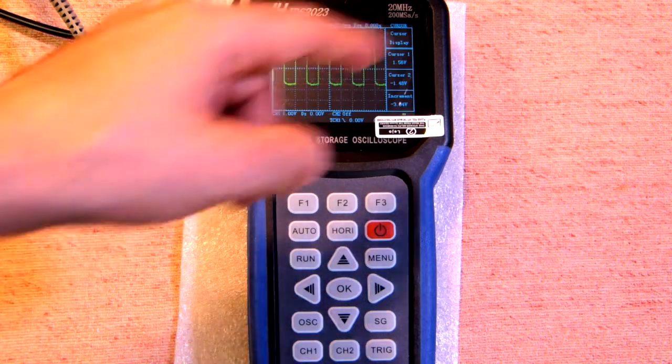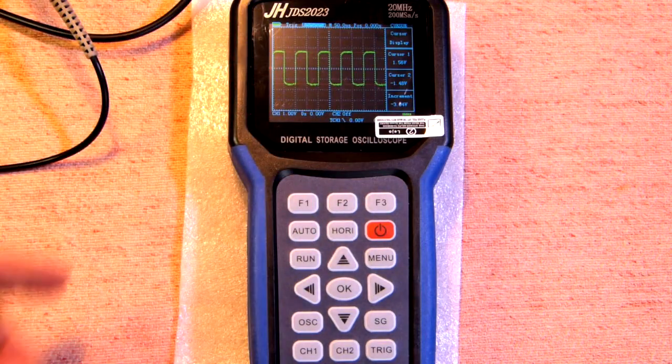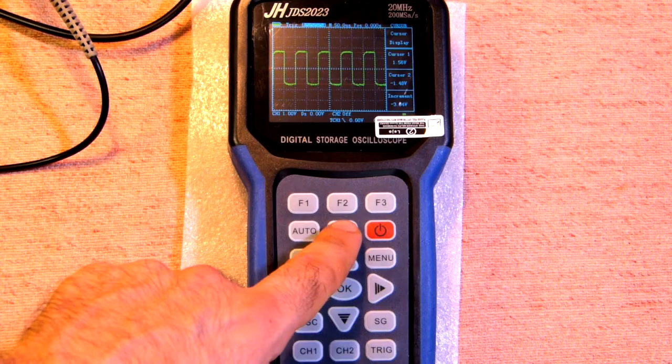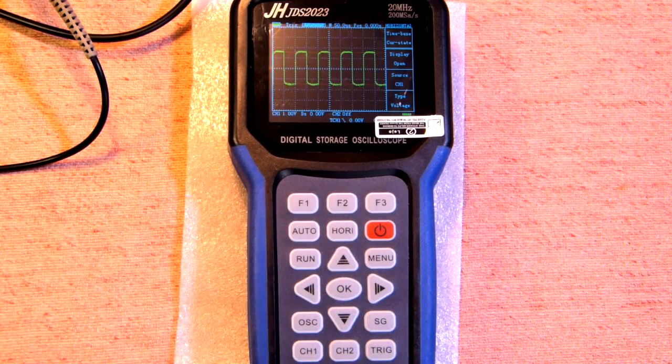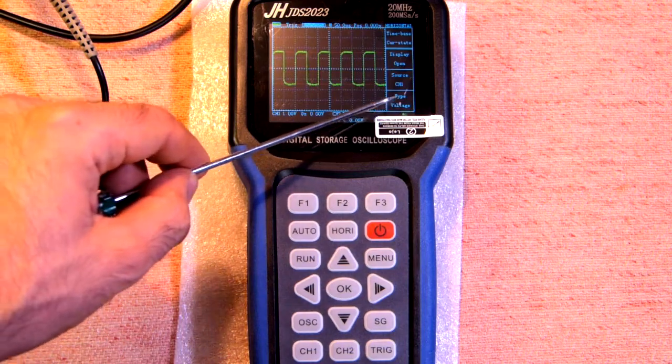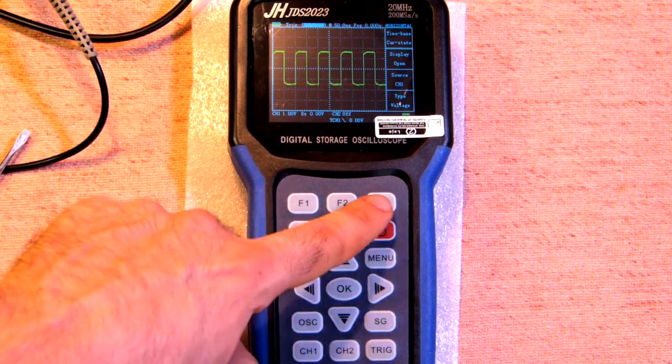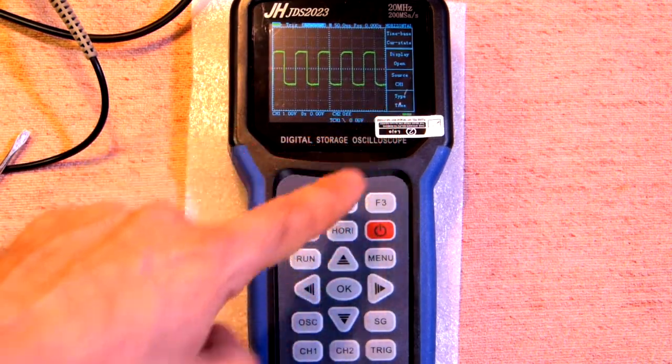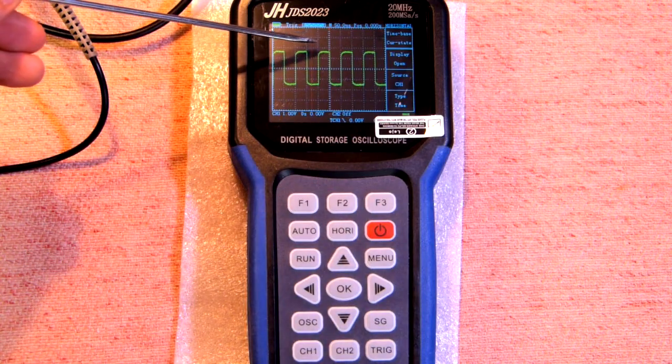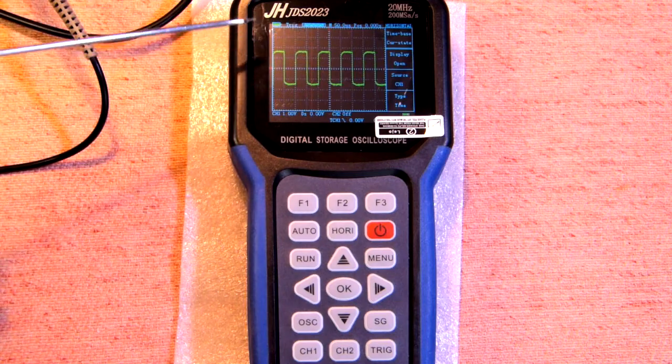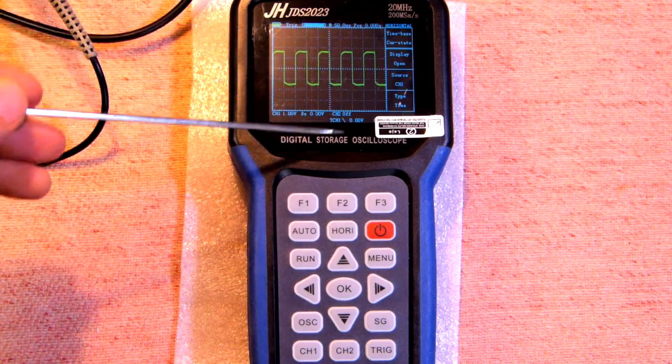Here we have the horizontal cursors. In case of vertical cursors, we again should press the button Hori and here we have type voltage. Now we have type time. So in case of measurement of period we should adjust these red cursors.